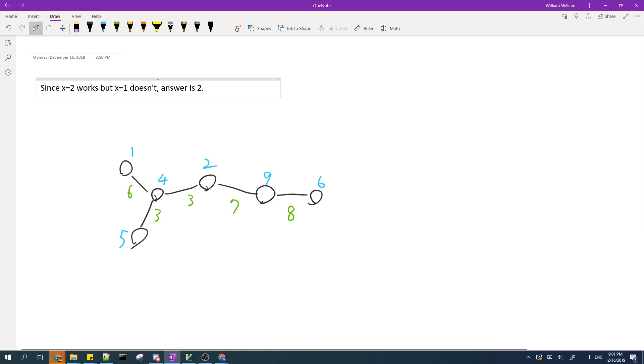Since X equals 2 works, but X equals 1 doesn't, then the answer for this graph is 2. And I'll include a slightly commented code in the comments.